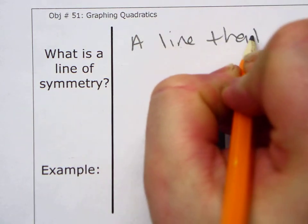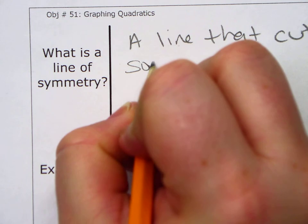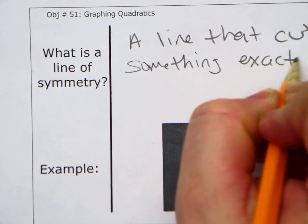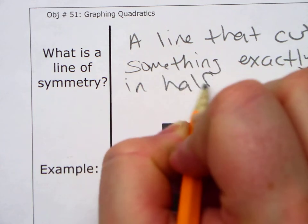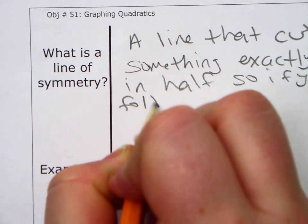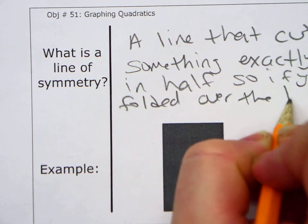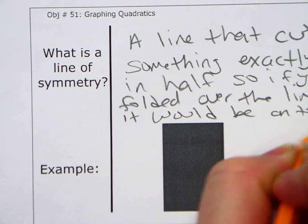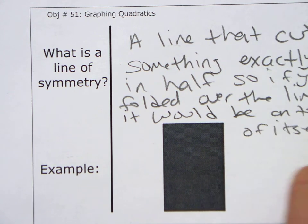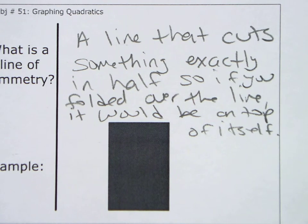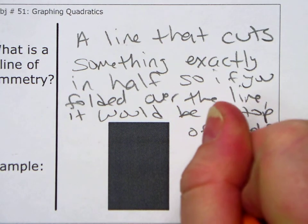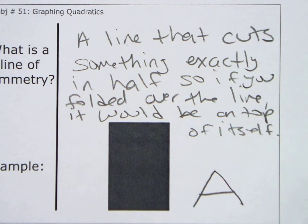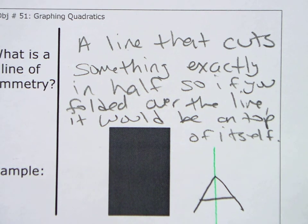A line that cuts something exactly in half. So if you folded over the line, it would be on top of each other, be on top of itself. I'm pretty sure that if I ever was on my Promethean, it would be a lot better definition than that, but whatever. All right, so for example, the letter A, where would its axis of symmetry be, or line of symmetry? Right down through that center. If I fold over that green line, it would fold on top of itself, okay?